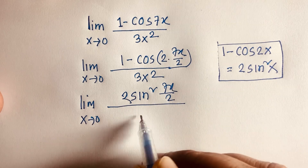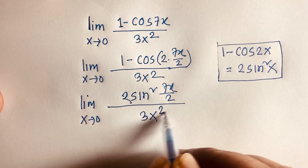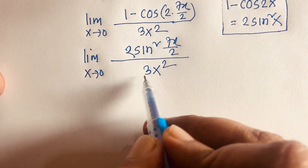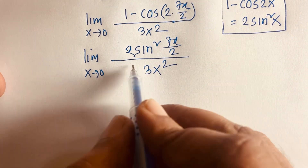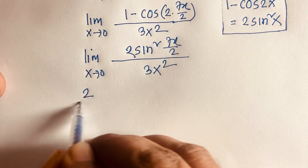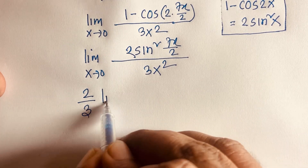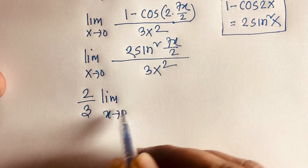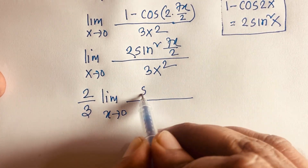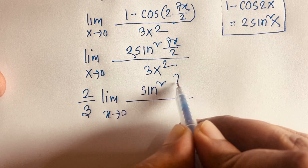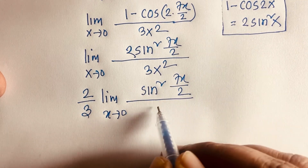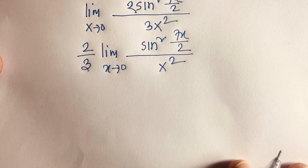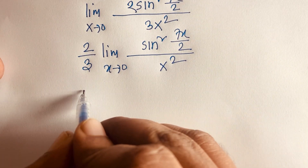We can factor out 2 over 3 as a constant, so the expression becomes 2 over 3 times limit x tends to 0 of sin squared (7x/2) over x squared.